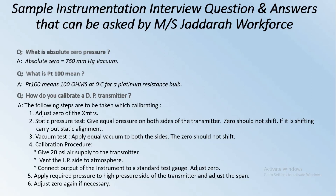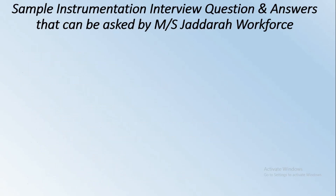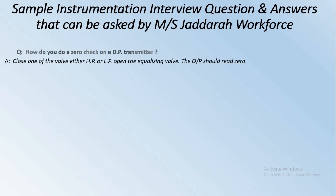Calibration procedure: give 20 PSI air supply to the transmitter with the LP side open to atmosphere. Connect the output of the instrument to a standard test gauge. Adjust zero, apply the required pressure to the high-pressure side of the transmitter and adjust the span. Adjust zero again if necessary.